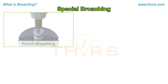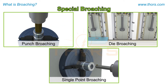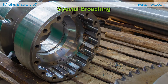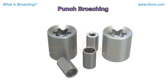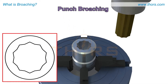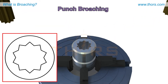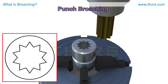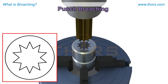Special broaching operations such as punch broaching, die broaching, and single point broaching are used when the broach shape cannot pass all the way through the workpiece. Punch broaching uses a broach to cut internally in the component and is used for high volume production. The punch broach removes a predetermined amount of material in one pass, similar to the shaping process. Either the workpiece or the tool holder is indexed to subsequent punch tools until the final shape is produced.